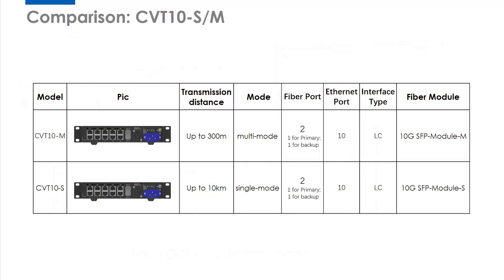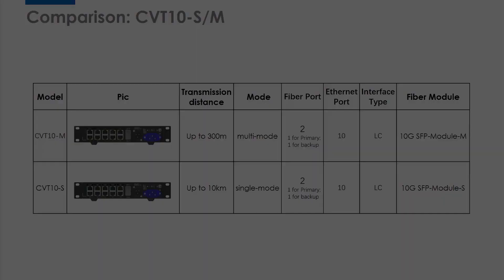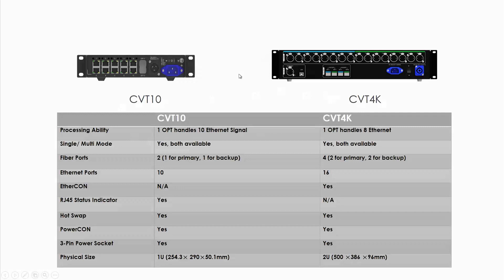Now we've finished the details of CVT10 and CVT4K. Let's compare the two. For physical size, CVT10 is 1U and CVT4K is 2U, so CVT10 saves more space. For processing ability, CVT10's one OPT port handles 10 Ethernet signals, while CVT4K's one OPT port handles 8. Both have single and multi-mode options. For fiber ports, CVT10 has 2 and CVT4K has 4.